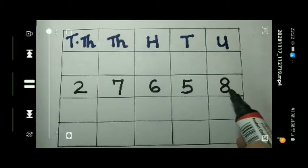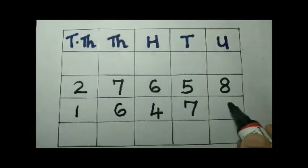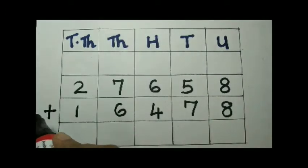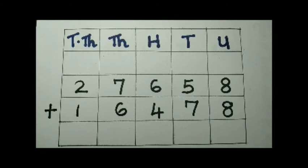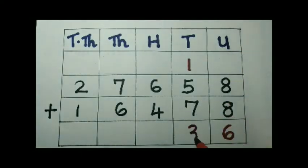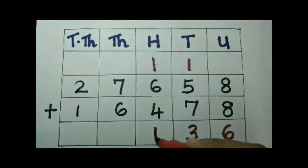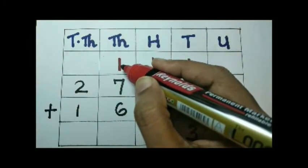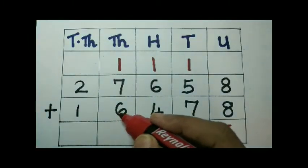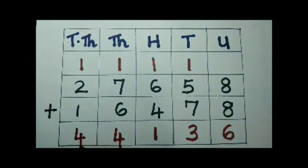Now we begin with the method. 27,658 is the cost of computers and 16,478 is the cost of the printer. We add to find the total. Starting from units place: 8 plus 8 is 16, carry over 1. 5 plus 7 plus 1 is 13, carry over 1. 6 plus 4 plus 1 is 11, carry over 1. 7 plus 6 plus 1 is 14, carry over 1. 2 plus 1 plus 1 is 4. So 44,136 is the cost of computer and printer.